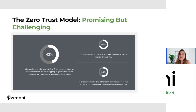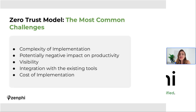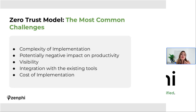As you can see on this slide, Zero Trust is a promising but quite challenging model. According to the latest research, about half of the companies that plan to implement this framework are anticipating challenges and struggle to get started. The model is associated with multiple obstacles such as complexity of implementation, impacts on productivity — arguably one of the most concerning ones — as well as challenges around visibility, integration with existing tools, and cost of implementation.